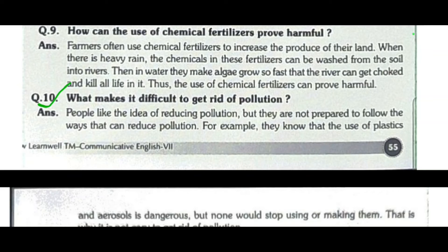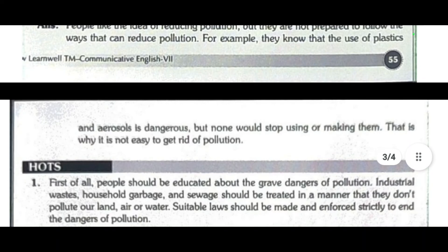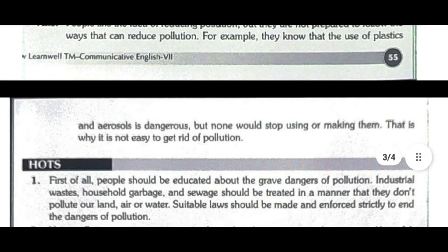What makes it difficult to get rid of pollution? People like the idea of reducing pollution, but they are not prepared to follow the ways that can reduce it. For example, they know that the use of plastics, chemicals, and aerosols is dangerous, but no one would stop using or making them. That is why it is not easy to get rid of pollution.